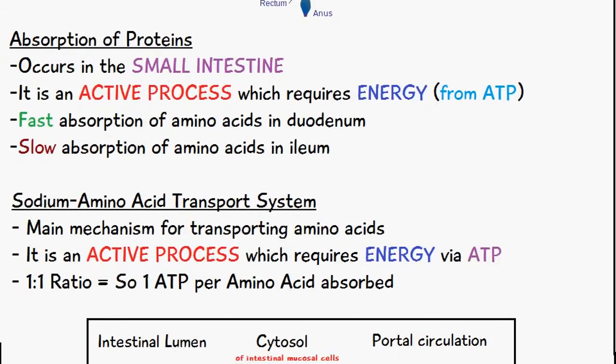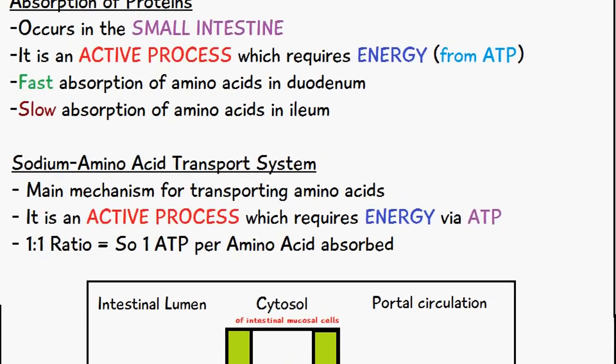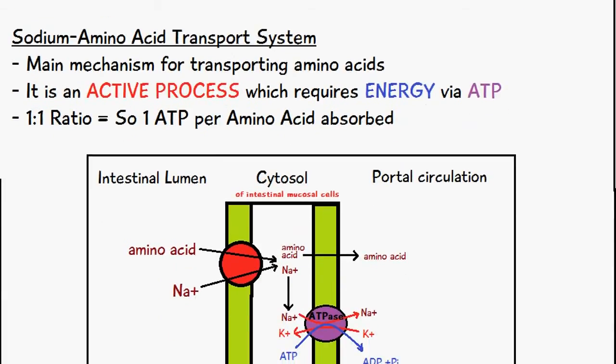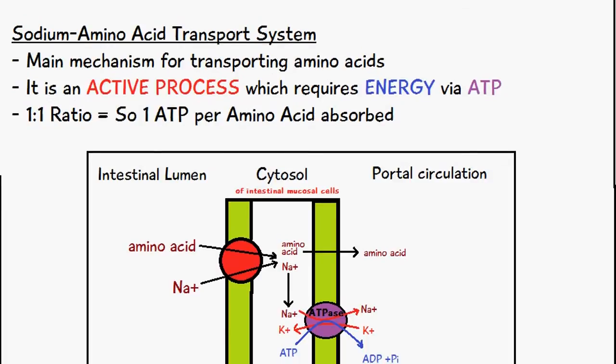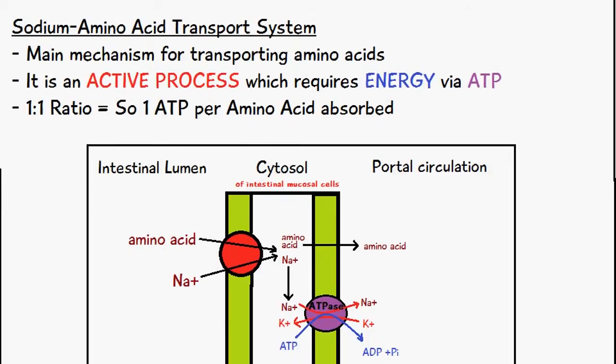The sodium amino acid transport system is the main mechanism for transporting amino acids and it's an active process which requires energy via ATP and it occurs at a 1 to 1 ratio. So one ATP is used per amino acid absorbed.